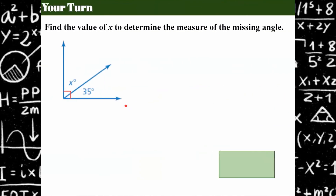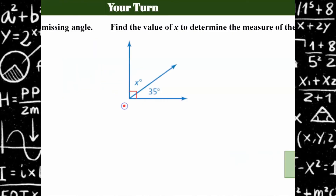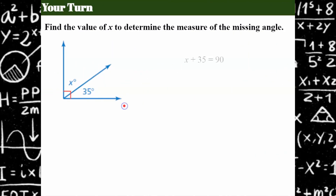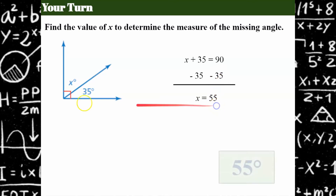Your turn — can you find the value of x to determine the missing angle? Please pause and come back when you're ready. Welcome back. These are adjacent angles that together form a 90-degree angle, so x + 35 = 90 degrees. Subtract 35 from both sides and x = 55. This time the angle was simply x, so the answer is 55 degrees.